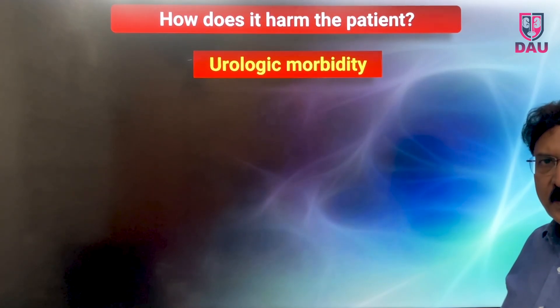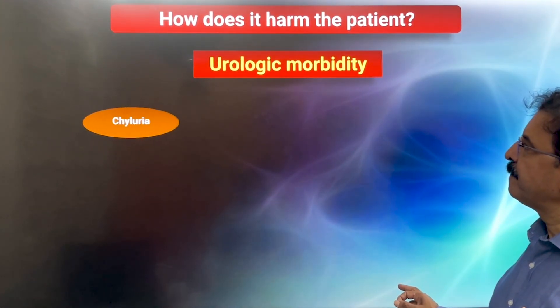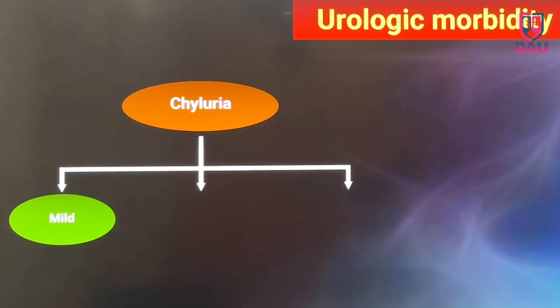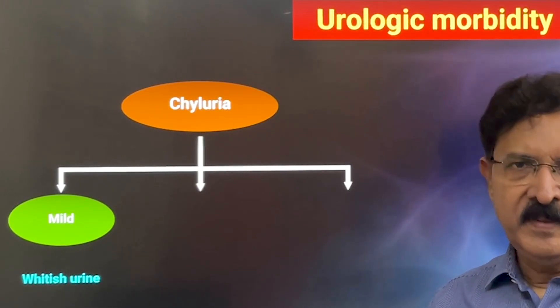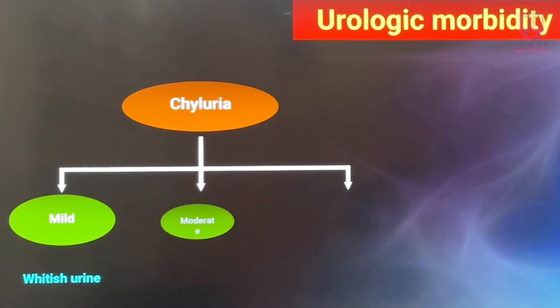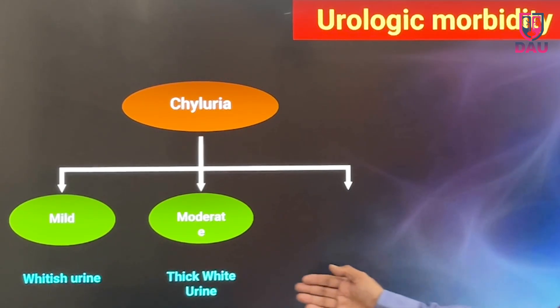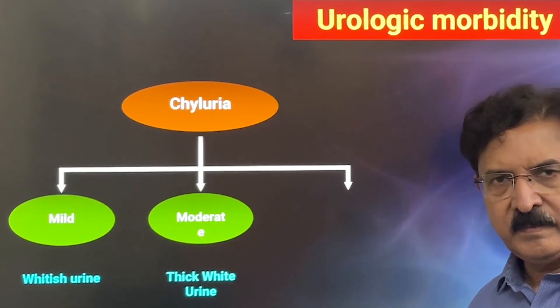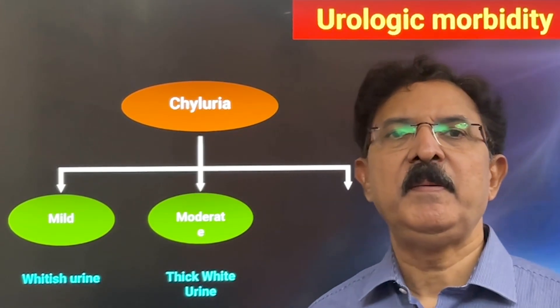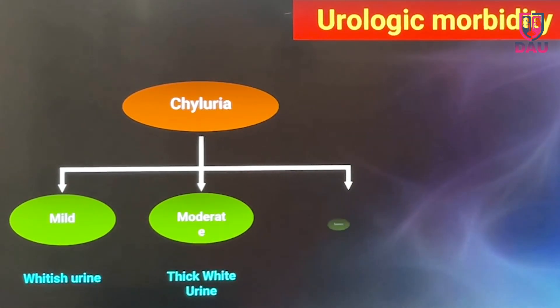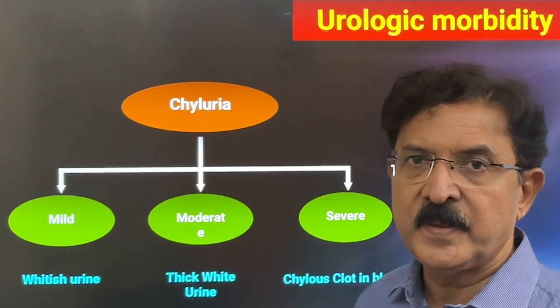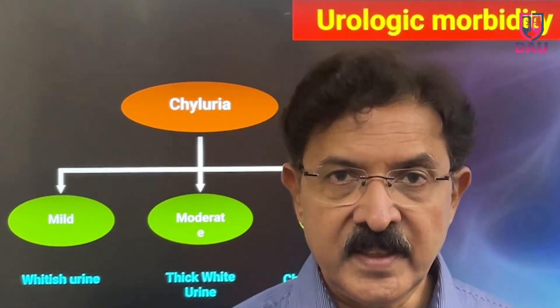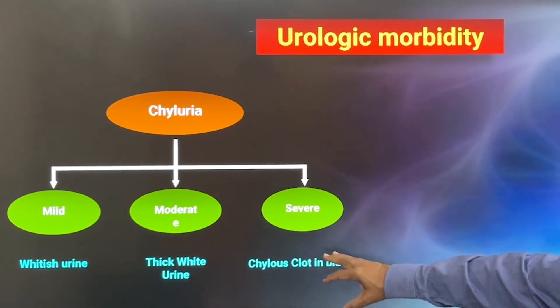First, let us look at urological morbidity. Chyluria is seen in a mild form where patients complain of passing whitish urine that looks slightly white, more like buttermilk or even less dense, with intermittent episodes. Some patients have moderate chyluria with increased milkiness — thick white urine passed four times a day. Then there is a severe variety where the patient passes chylous clots in the bladder and often presents with urinary retention, passing thick curd-like clots.